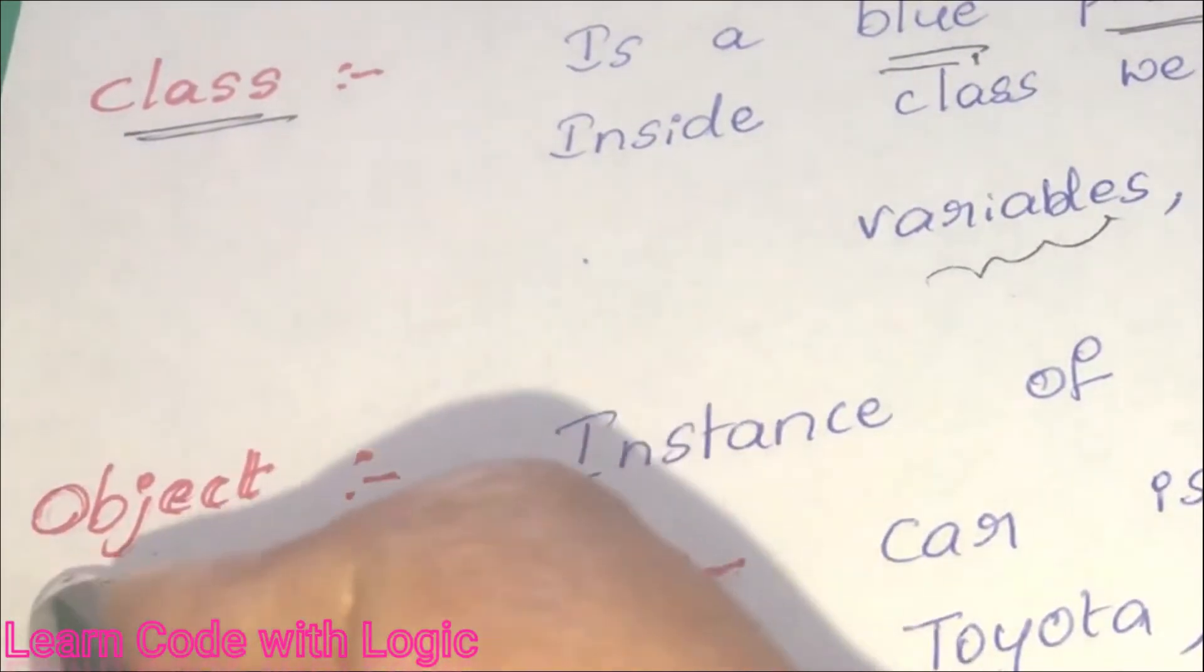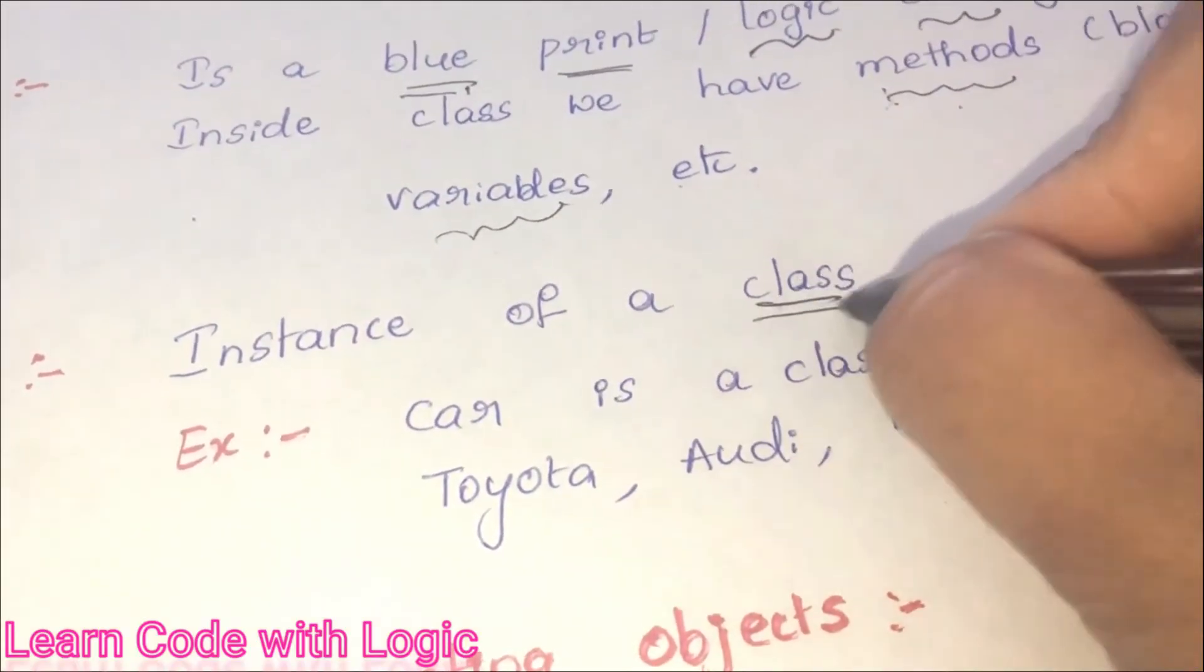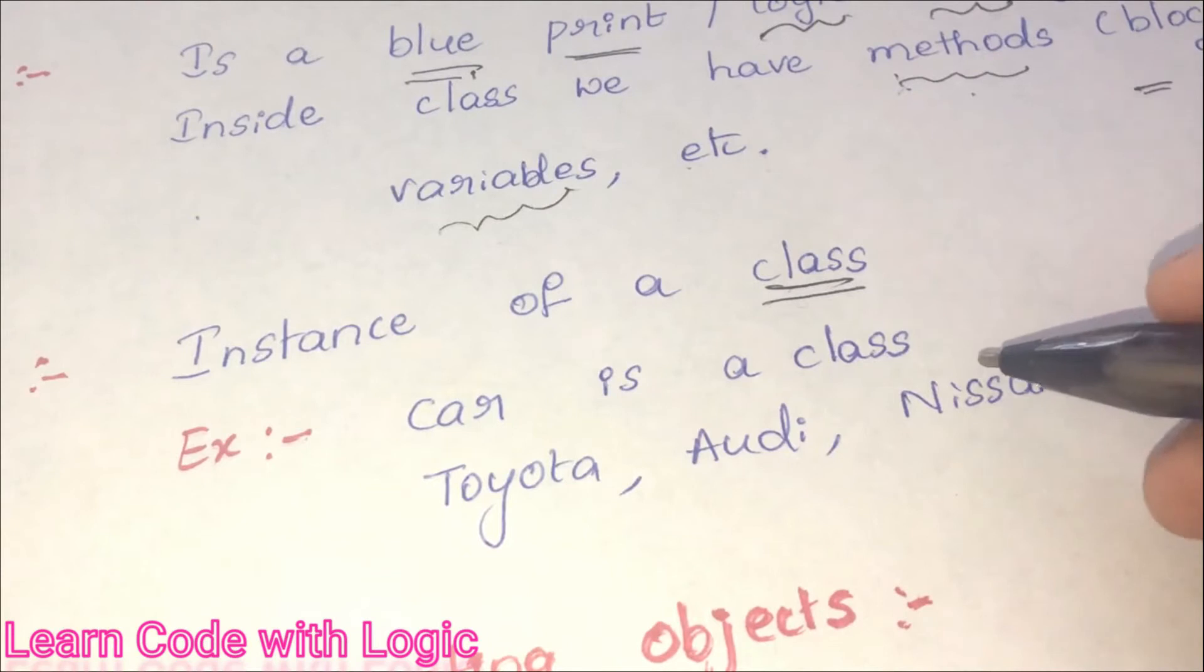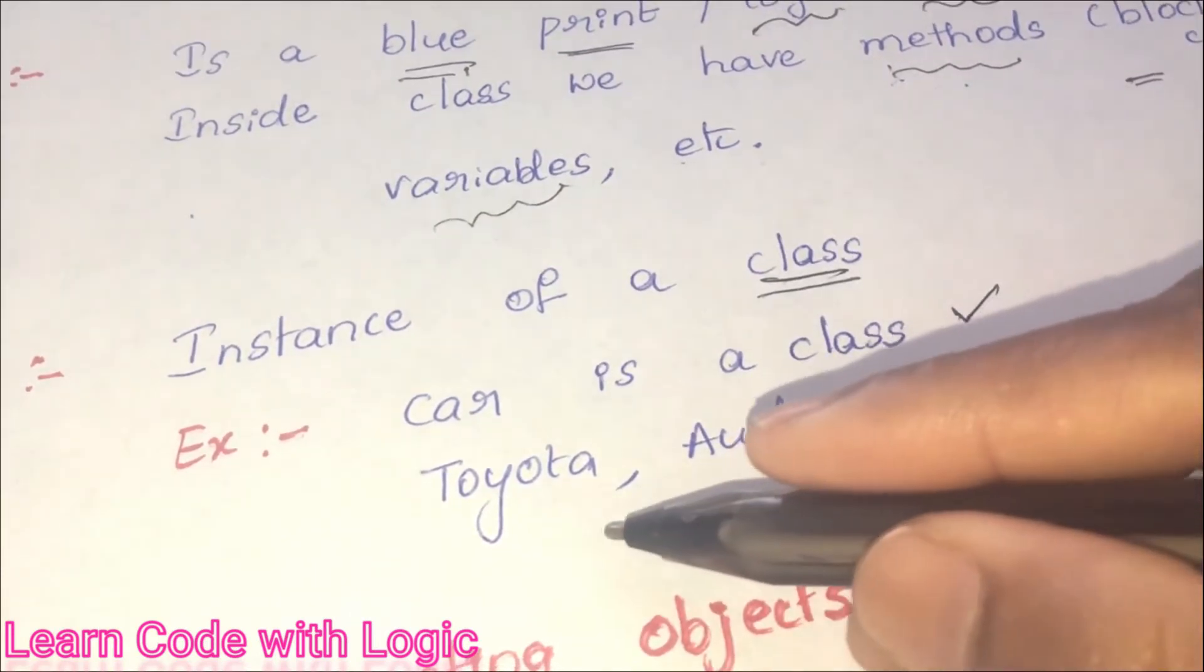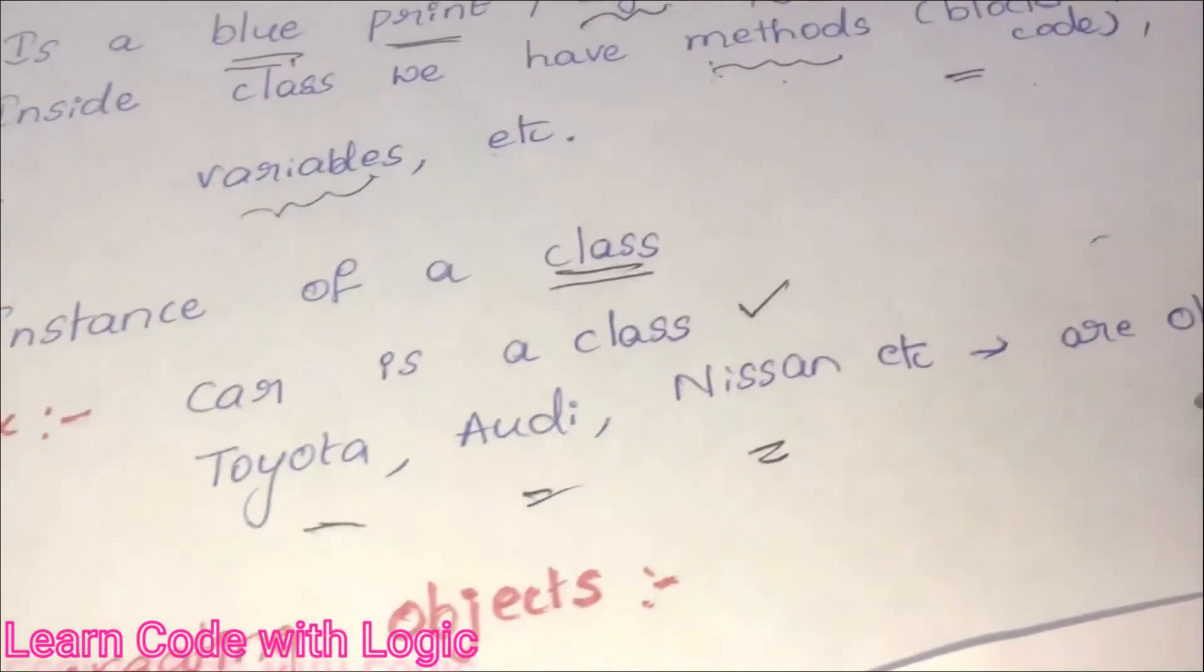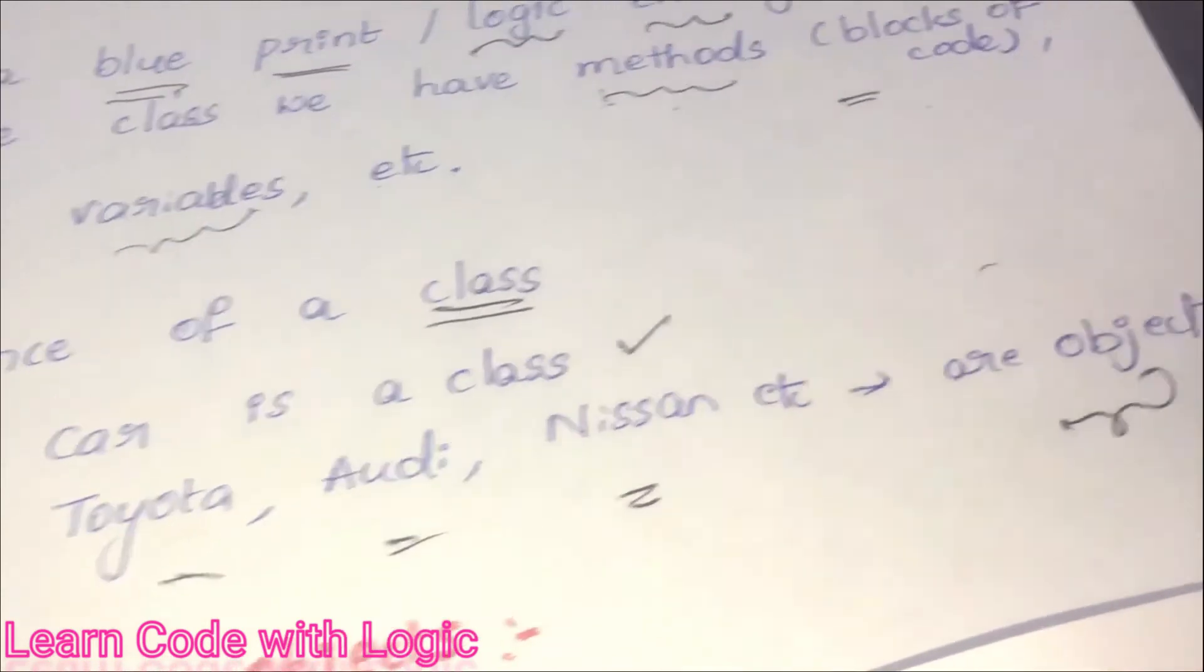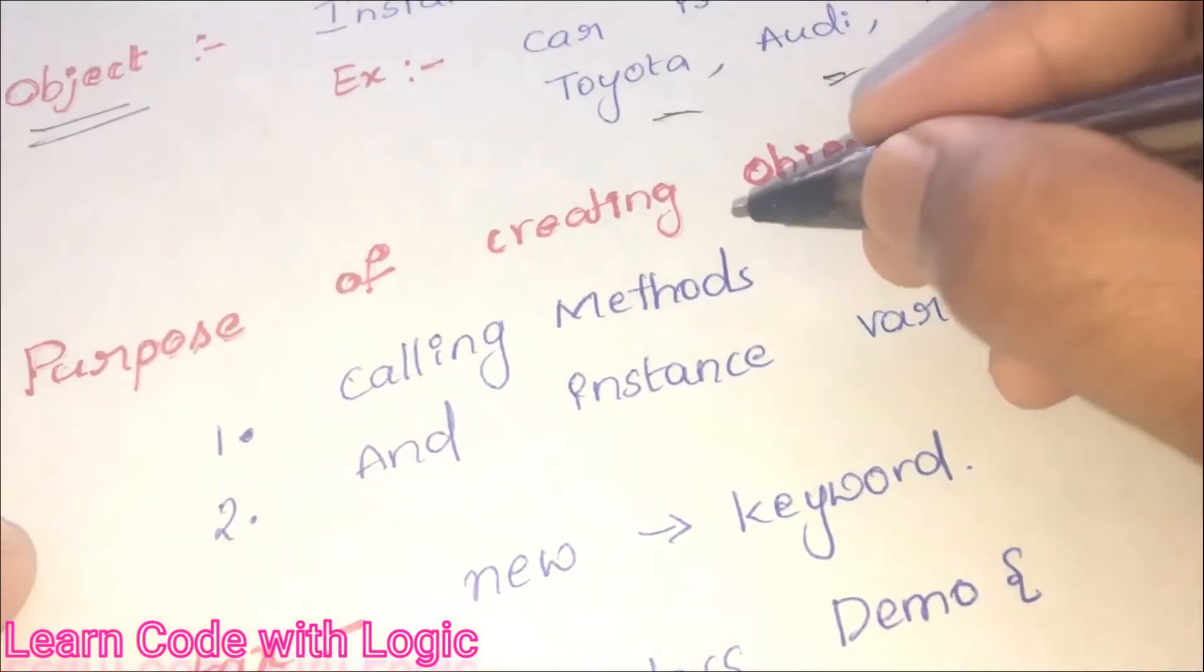The next important terminology we need to understand is object. Object is instance of a class. Let's see example here. Suppose car is a class where the companies or manufacturers like Toyota, Audi, Nissan are considered as objects in Java.